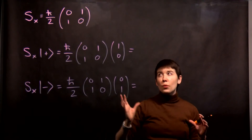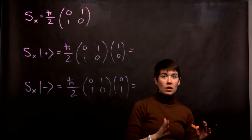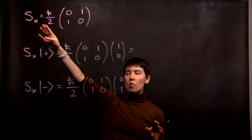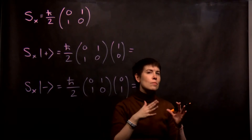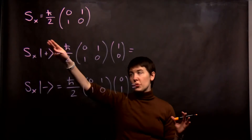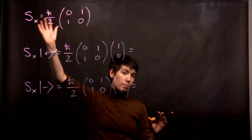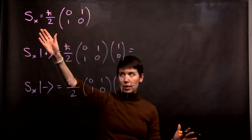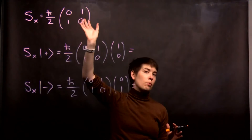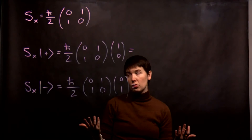Whenever we have a matrix representation, we have to have defined the basis vectors for that vector space. This operator can be written in different bases — it means measure spin in x direction. Right now I'm writing it in the z basis, which is our normal basis.